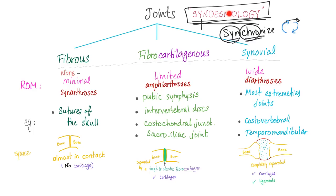'Desmo' means band, ligament, or fastening together — so a joint brings two bones together. We have three types: fibrous joints, fibrocartilaginous joints, and synovial joints.